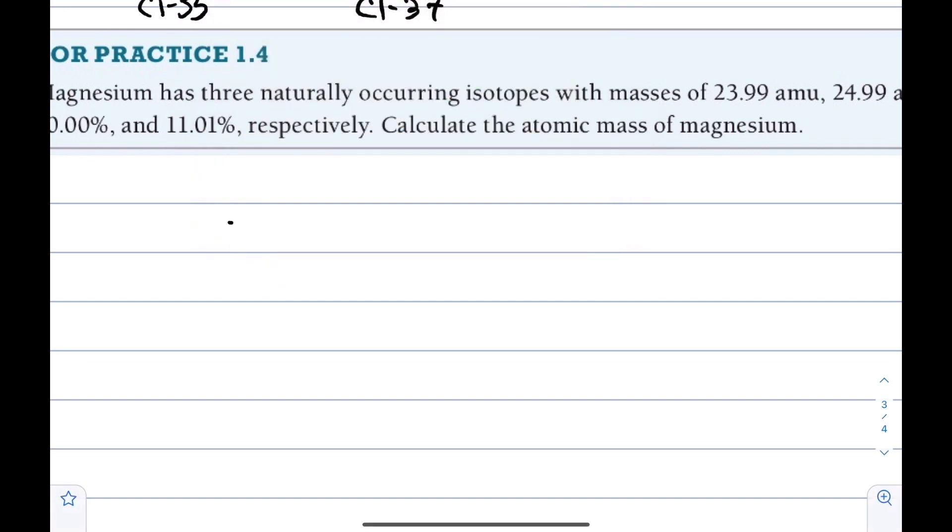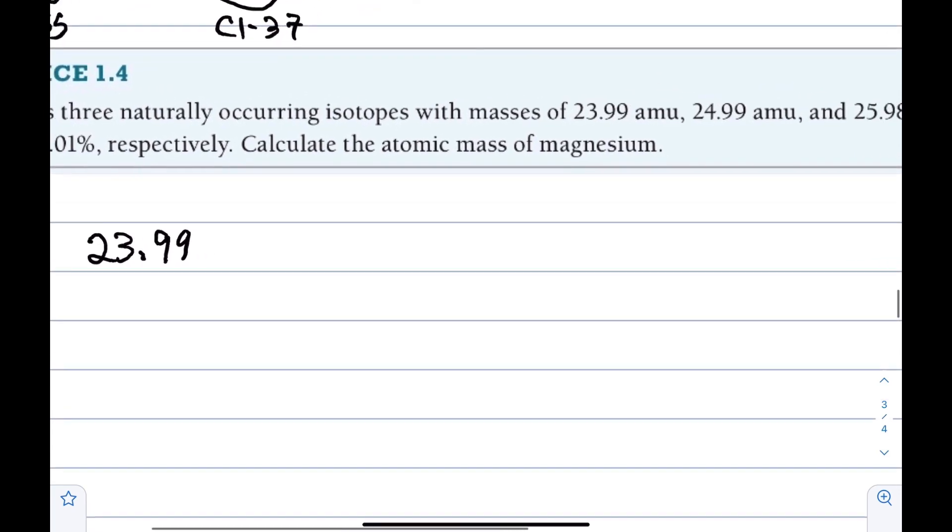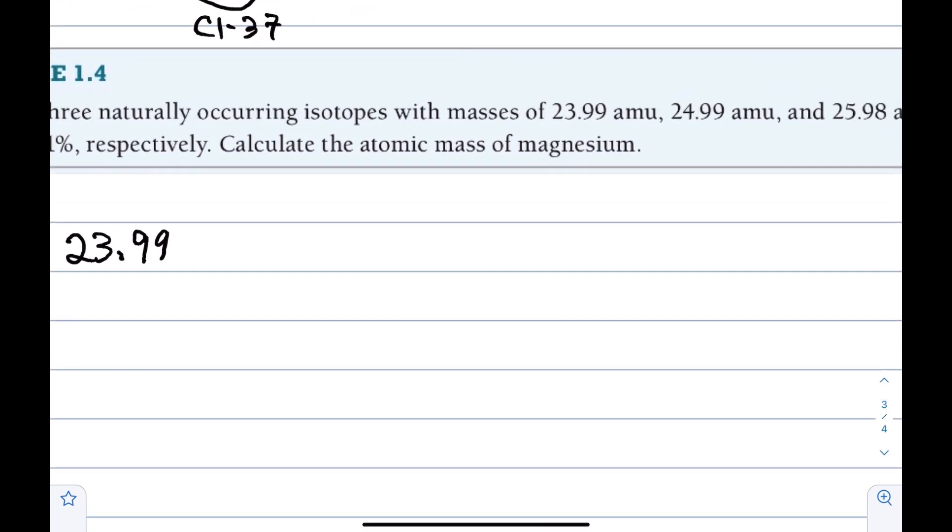We have 23.99. I'm going to switch my color. 23.99. And these guys we don't put in decimal because they're masses. They're not percents. They're not per 100. 24.99. So we can guess this is magnesium-24, magnesium-25, right? And then we have 25.99. This is probably magnesium-26. With these kind of exact masses that are not whole numbers, if you want to know what isotope it is, round to the nearest whole number, which will not be far.